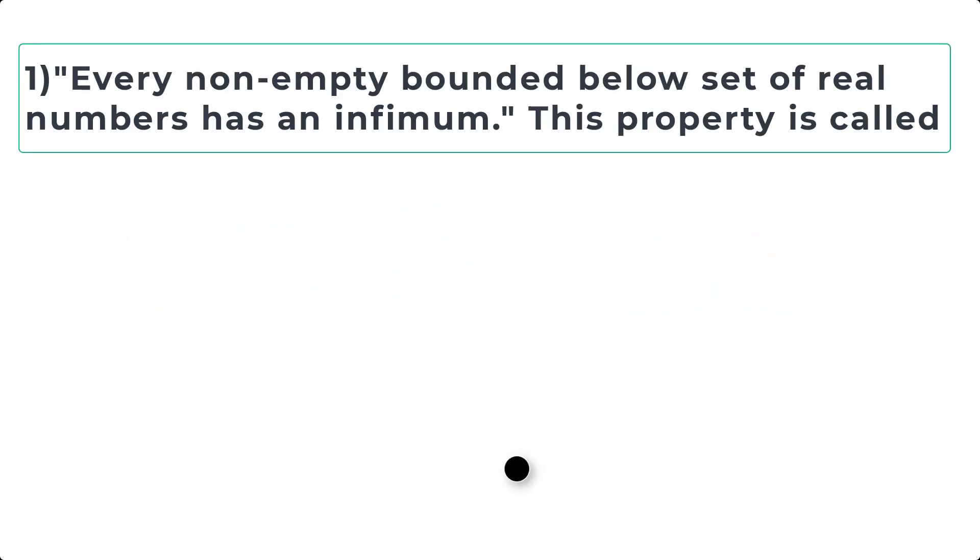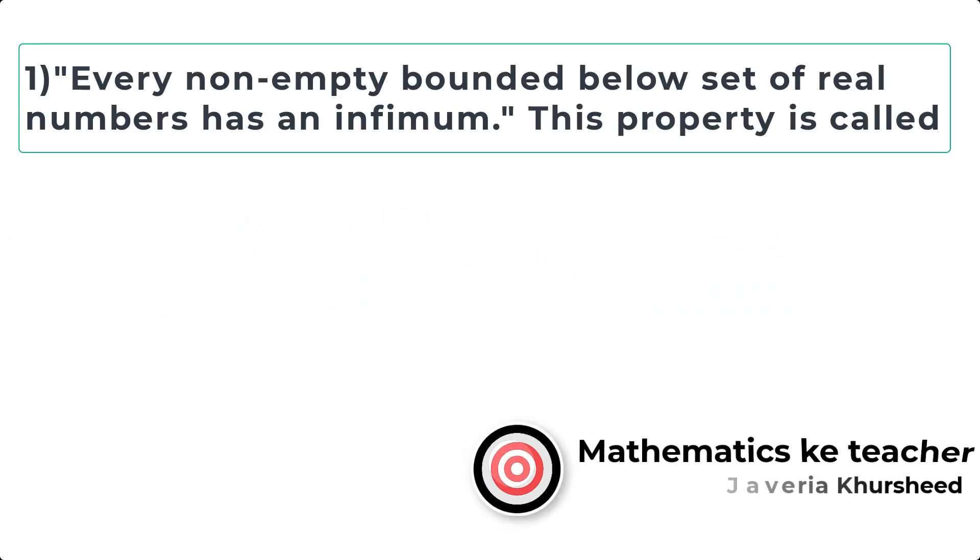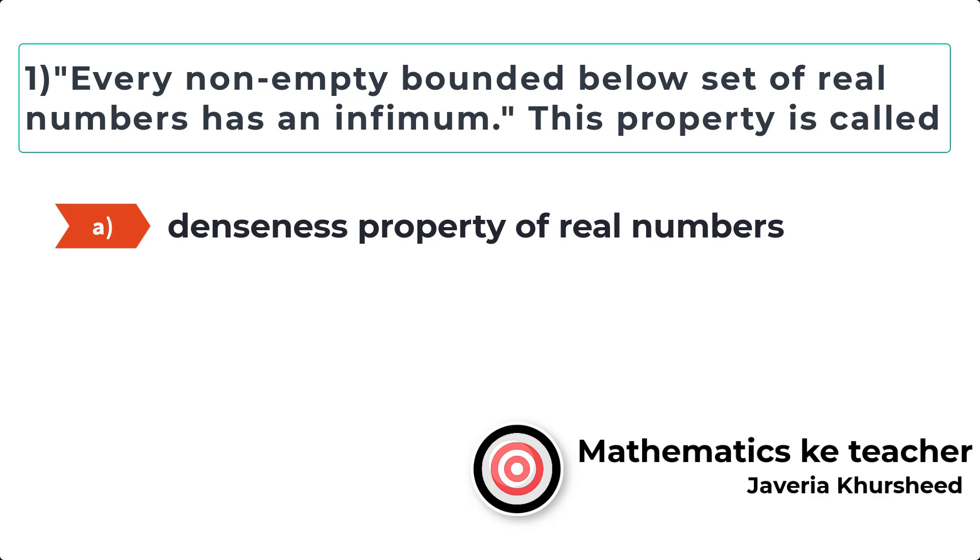Question 1: Every non-empty bounded below set of real numbers has an infimum. This property is called: A) Denseness property of real numbers, B) Archimedean property.